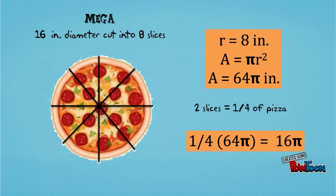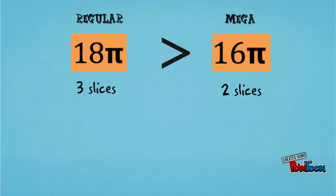So this means that in order to get the most pizza for their money, each student should select three slices of the smaller pizza rather than two slices of the larger pizza.